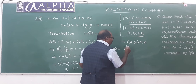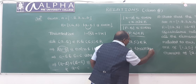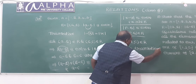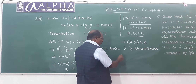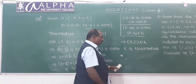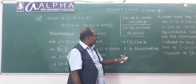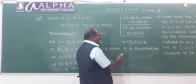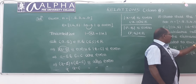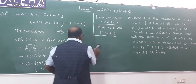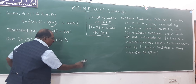Since (a - b) + (b - c) = a - c, and the sum of two even numbers is also even, this implies a - c is also even. Therefore (a, c) belongs to R, meaning R is transitive. Since R is reflexive, symmetric, and transitive, therefore R is an equivalence relation.